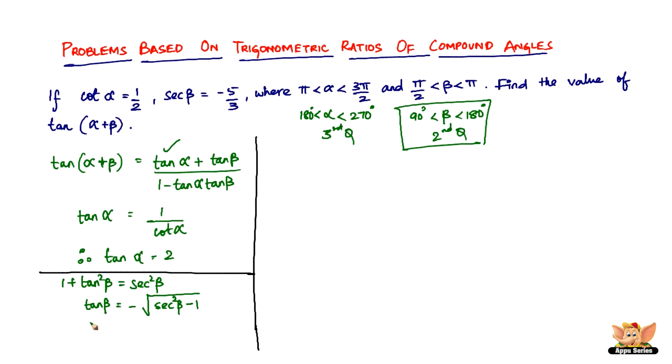So we have tan β equals minus sec β. Sec can be minus 5/3, so sec² β is going to be 25/9 minus 1, solving which we get minus 4/3.